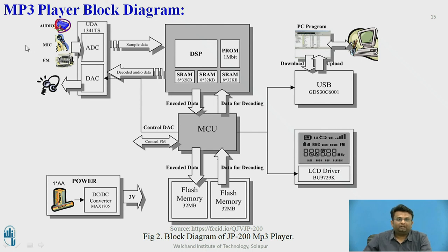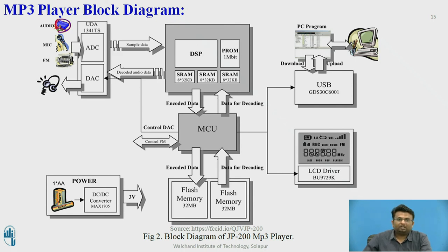For recording, data is recorded in two ways: from the microphone and from the audio jack input. This incoming data is analog, so an analog-to-digital converter converts it to the digital domain. The data is sampled and given to the DSP, which adjusts the bit rates. The encoded data is given to the microcontroller, which saves it into flash memory. This is how data is recorded and played back in the MP3 player.